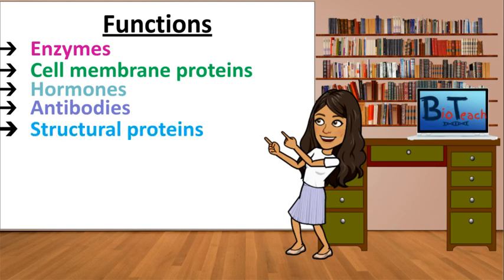The next one is looking at structural proteins. These give strength to organs, for example, things like collagen or elastin.